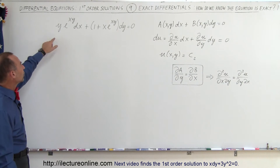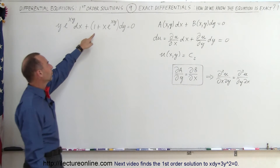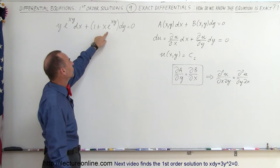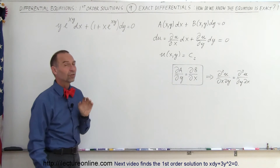So here we have an equation: y·e^(xy) dx plus (1 + x·e^(xy)) times dy is equal to 0.